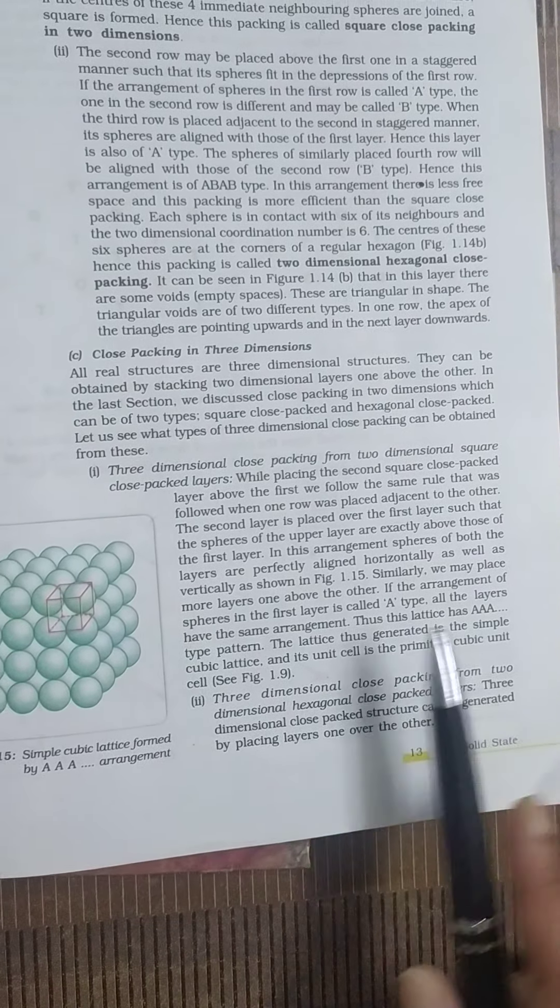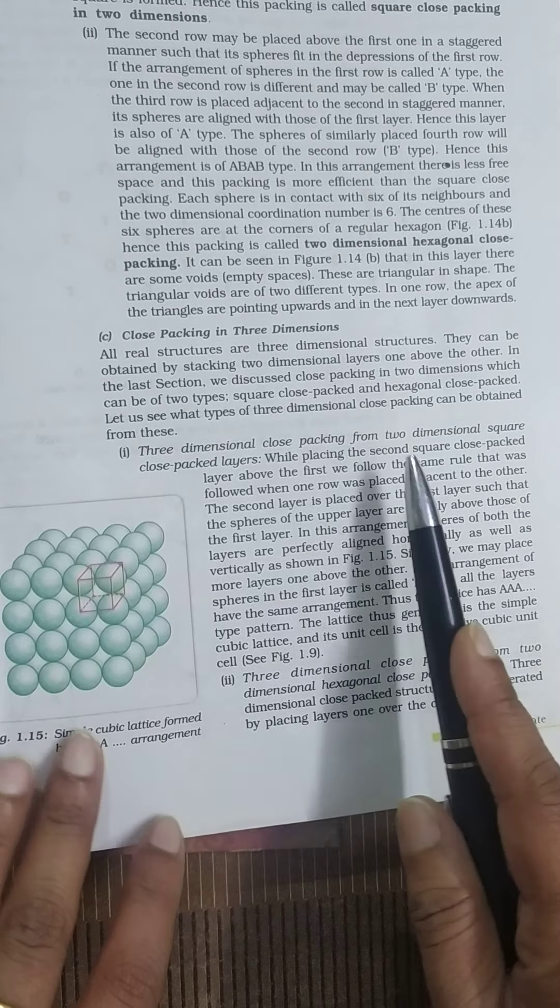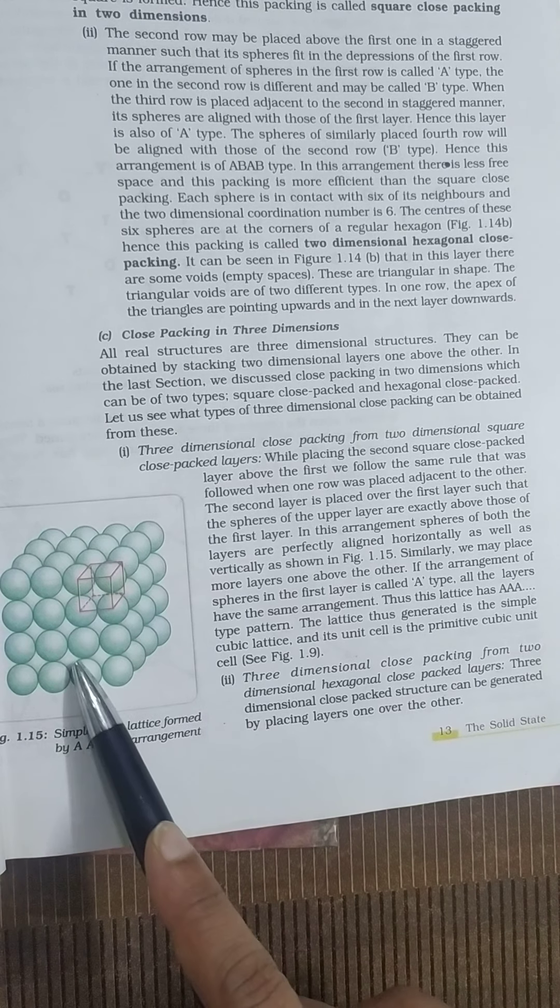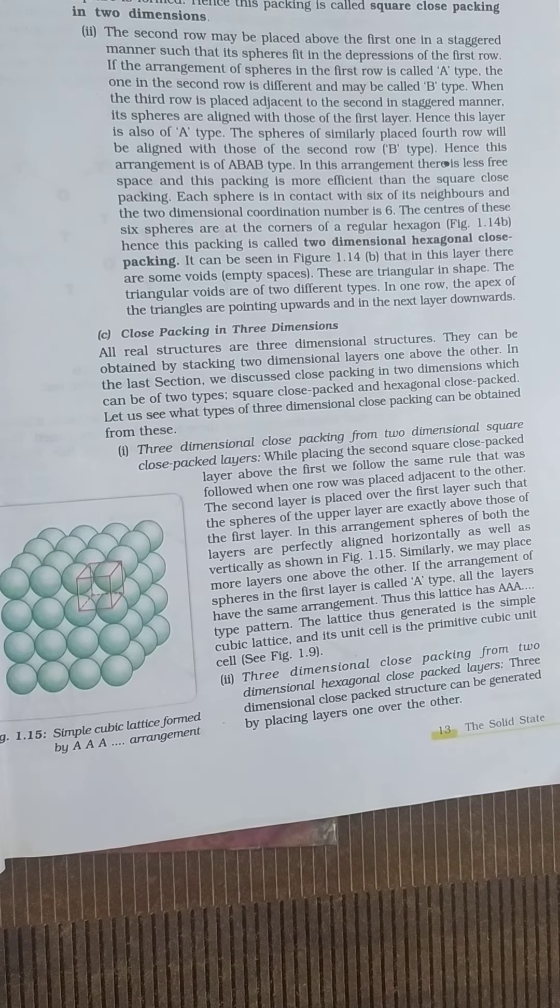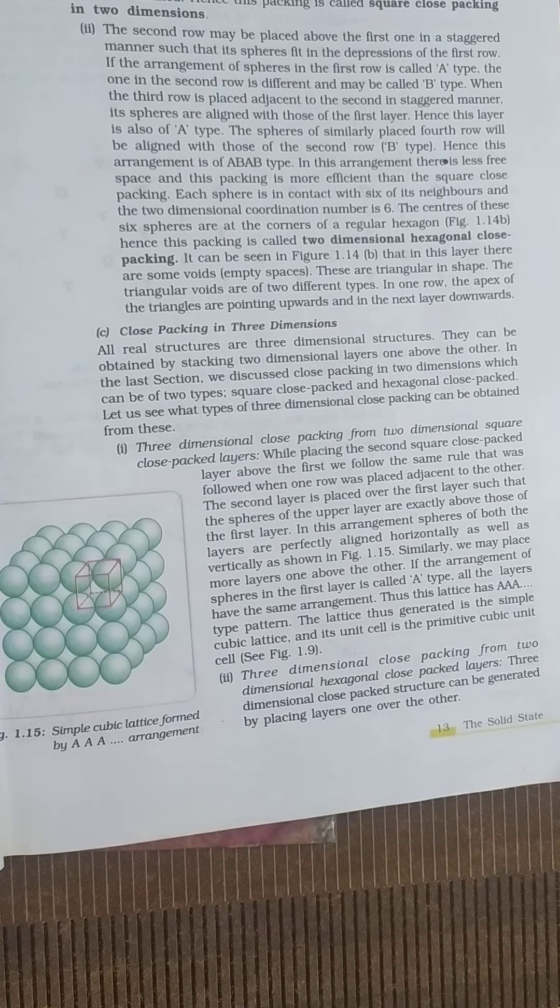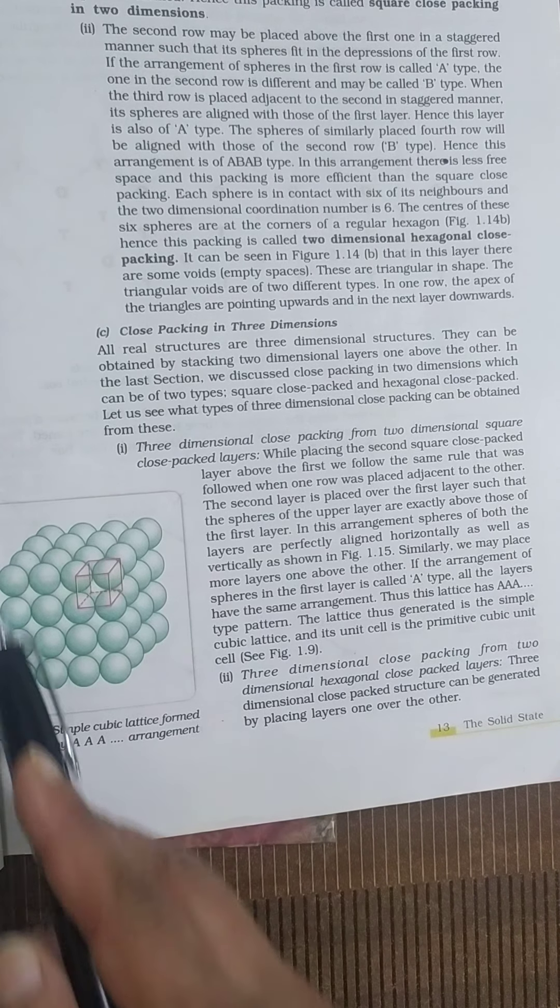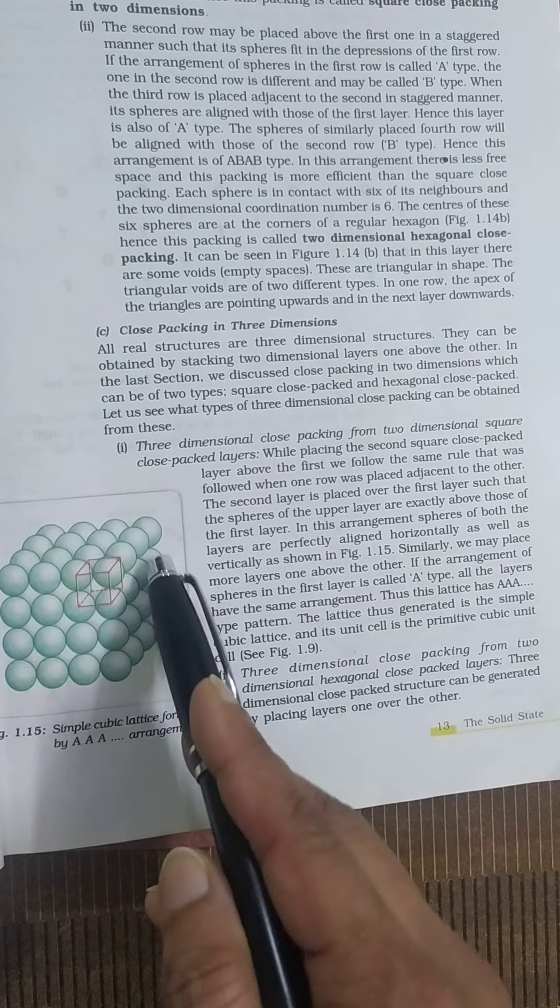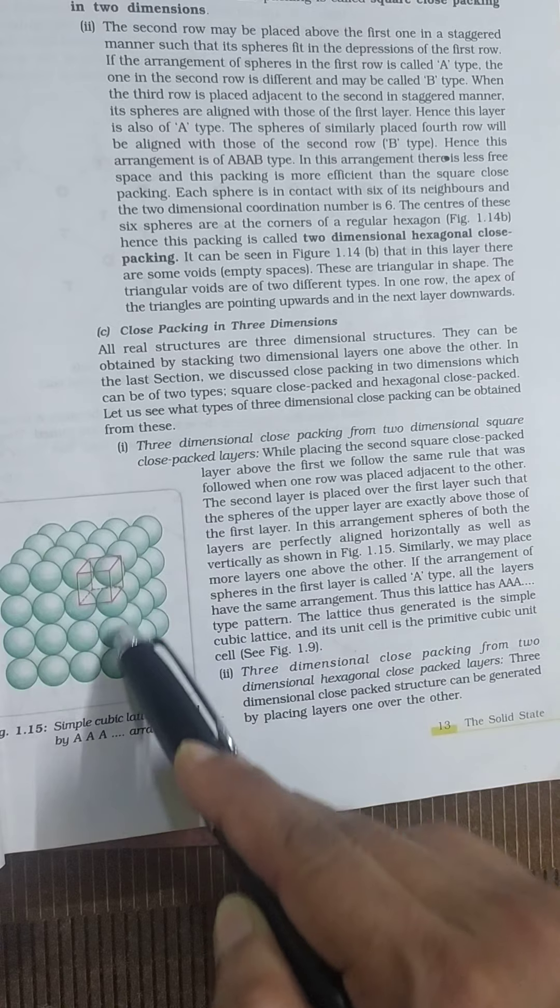If we are talking about close packing in three dimensions, so three dimensional close packing from two dimensional square close packed layer. Have a look on the figure. If we take square close packed layers and place one over the other, we get this type of structure in three D.